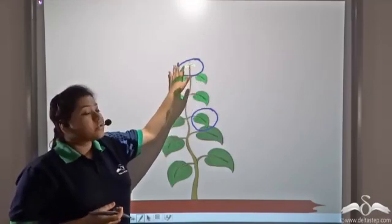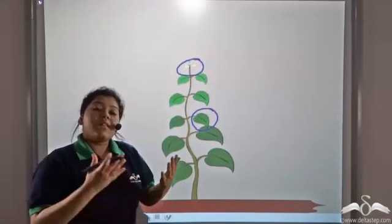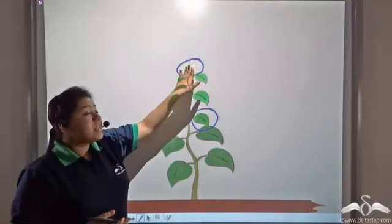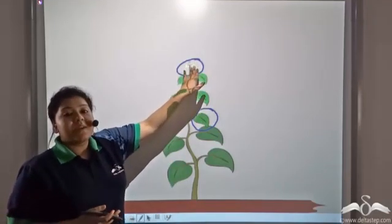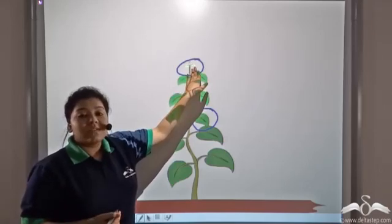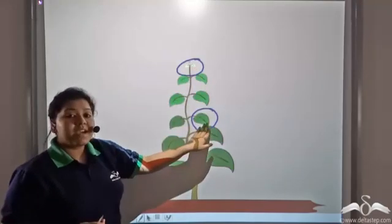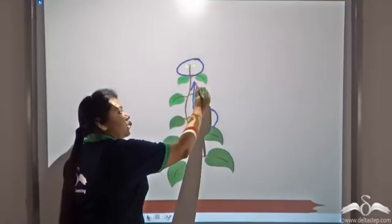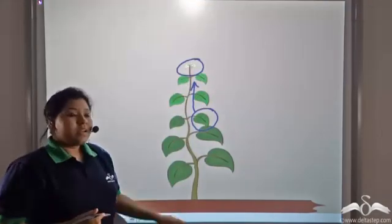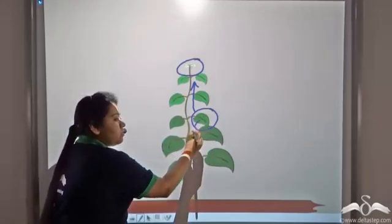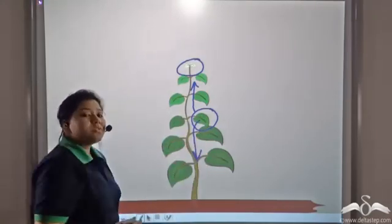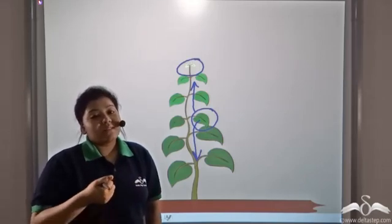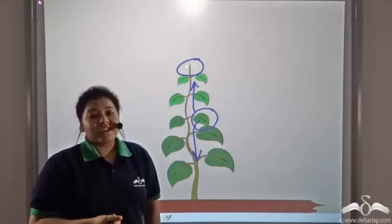But the leaf is growing and requires a lot of energy. So the amount of food that this leaf is preparing is not enough. Therefore, the food prepared by the bright green leaf gets transported upwards to this leaf, and also downwards to the root, since the entire plant requires food to stay alive.